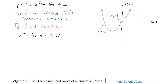So in this case, a is equal to 1 because that's what's in front of the x squared. b is equal to 4 — that's what's in front of the x. And c is equal to 1. We'll crank through the quadratic formula, but don't forget the big picture: we're going to end up with two values of x, and those two values are going to be the points where this function crosses the x-axis — the points where the function is equal to zero.